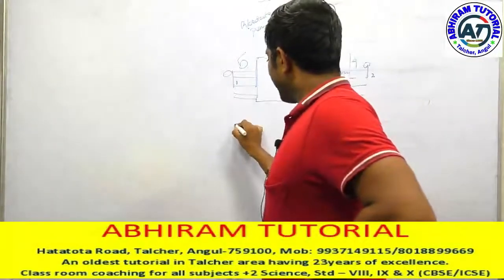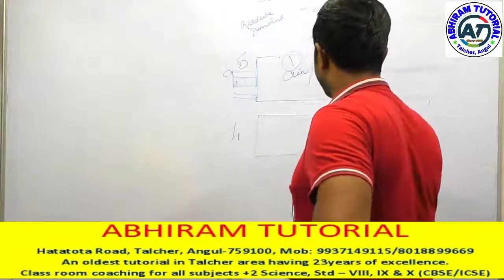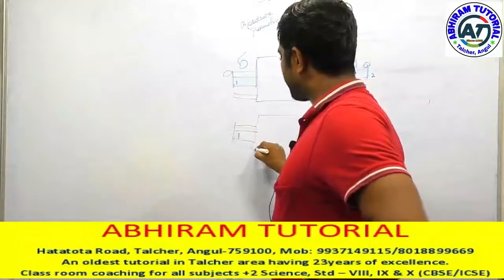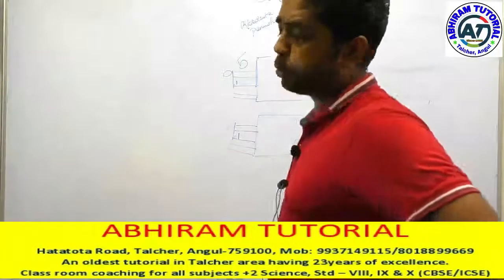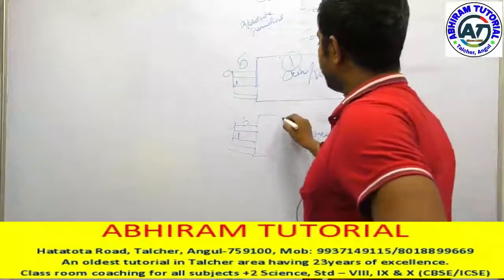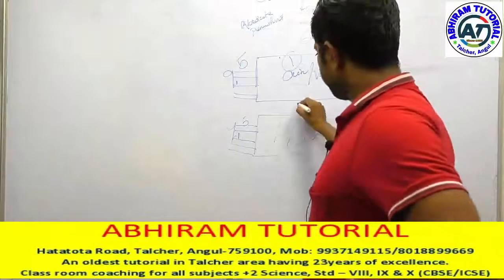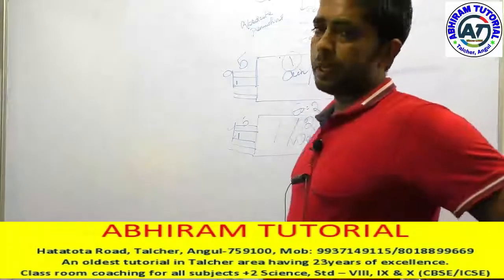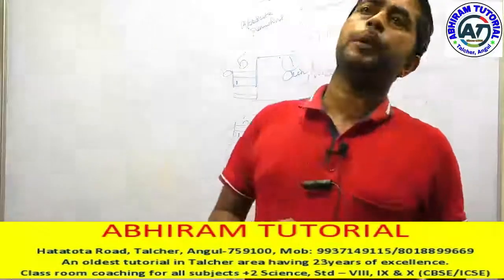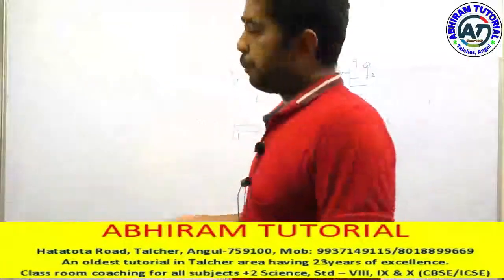In the next example, we take charges Q1 and Q2 with water as the medium. Taking 5 lines of force from Q1, the water medium absorbs 2 lines of force, and only 3 lines of force reach Q2. So epsilon equals 2. This means the force of attraction or repulsion depends upon permittivity.